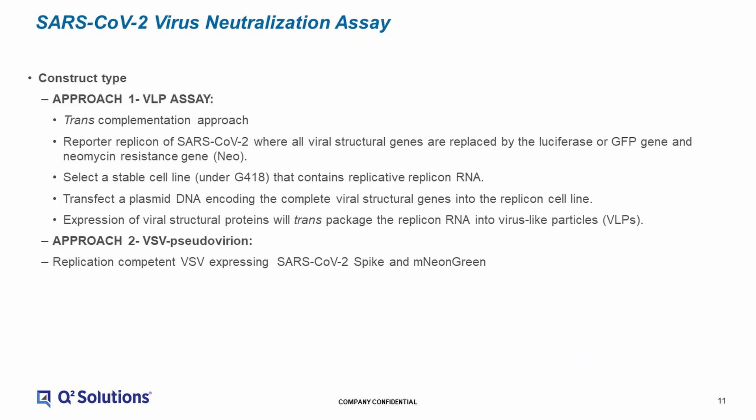We're pursuing two parallel paths for neutralization assays, with the idea that we will pick the best assay at the very end, but pursuing two assays will assure rapid deployment of an effective solution. The first methodology is viral-like particles. For this, you start with the wild type SARS-CoV-2 virus, delete the structural genes, add the reporter gene and a neomycin resistant to construct what's called a replicon. In parallel, you construct a cell line that expresses those structural genes that, when infected with the replicon, allows for trans-complementation to package the viral particles.